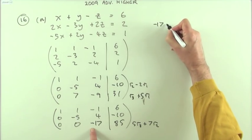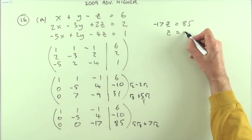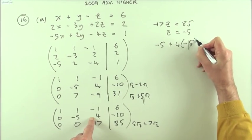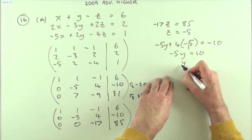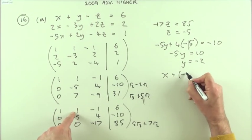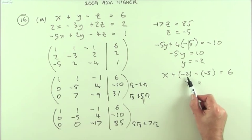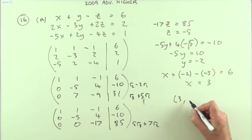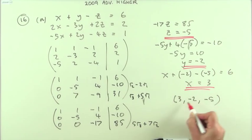Reading from the bottom up: negative 17z equals 85, so z equals negative 5. Going to the next line: negative 5y plus four times z — substituting z as negative 5 gives negative 5y minus 20 equals negative 10, so y equals negative 2. Then x plus y minus z equals 6: x plus negative 2 minus negative 5 gives x equals 3. Final answer: x equals 3, y equals negative 2, z equals negative 5.